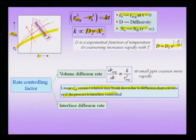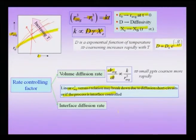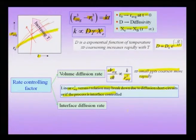Differentiating r̄³ − r₀³ = kt shows that dr̄/dt, the rate of increase of precipitate size with time, is proportional to 1/r̄². This implies smaller precipitates coarsen more rapidly than larger ones, since as r decreases the rate increases. Therefore a collection of smaller precipitates will coarsen faster than a collection of larger precipitates.